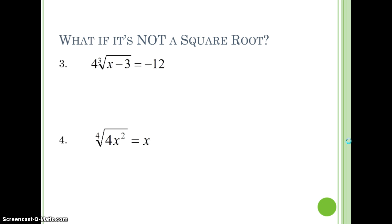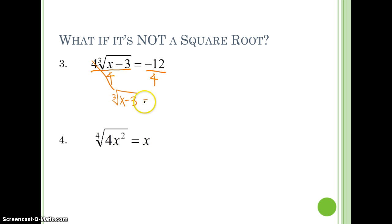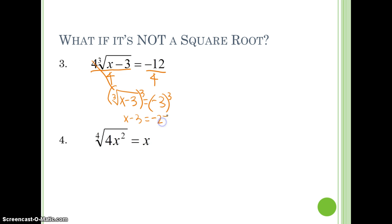What if it's not a square root? In this case, we have a cube root. Well, we have the same steps. First, we'll have to get this radical by itself, so we're going to divide both sides by 4 to move that 4 over. We end up with the cube root of x minus 3 equals negative 3. To get rid of this cube root, we're going to raise it to the power of the index, which is 3. So we'll cube both sides. We end up with x minus 3 equals negative 27. Remember, a negative cubed is a negative. Then we add 3 to both sides and we end up with x equals negative 24.